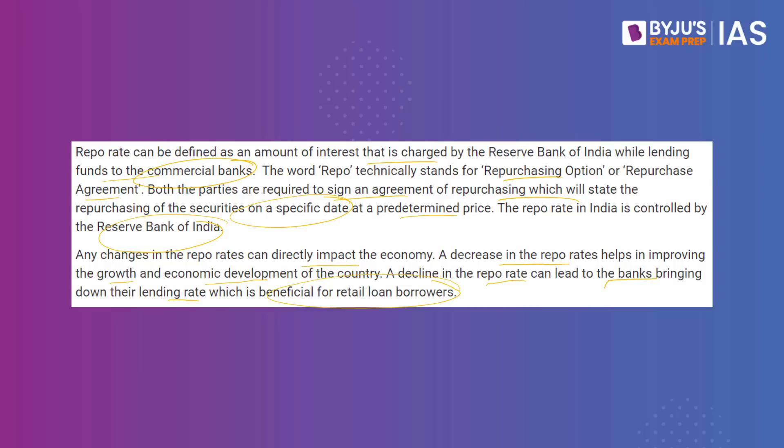All critical decisions about the repo rate are taken by the Monetary Policy Committee, which meets once every two months to assess the inflation and growth outlook. RBI Governor Shaktikanta Das stated that since inflation is not coming within the bracket of the inflation targeting scheme, and in a battle against inflation to ensure risks are controlled, the MPC by majority has decided to withdraw the accommodative stance and adopt the hawkish stance with respect to the repo rate.